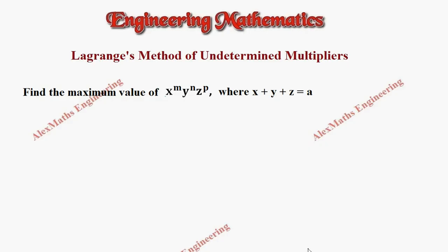Hi students, this is Alex. In this video we are going to use Lagrange's method of undetermined multipliers to find the maximum value of x^m · y^n · z^p where x + y + z = a.